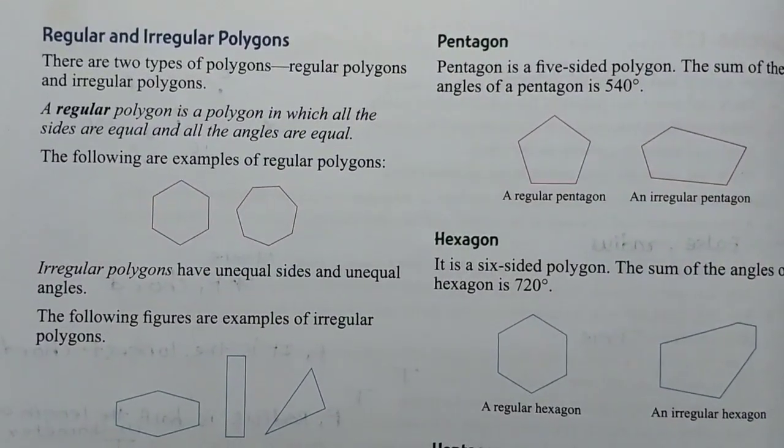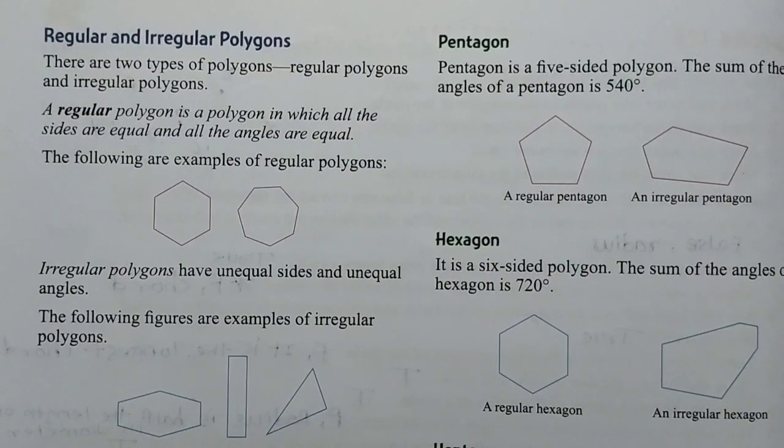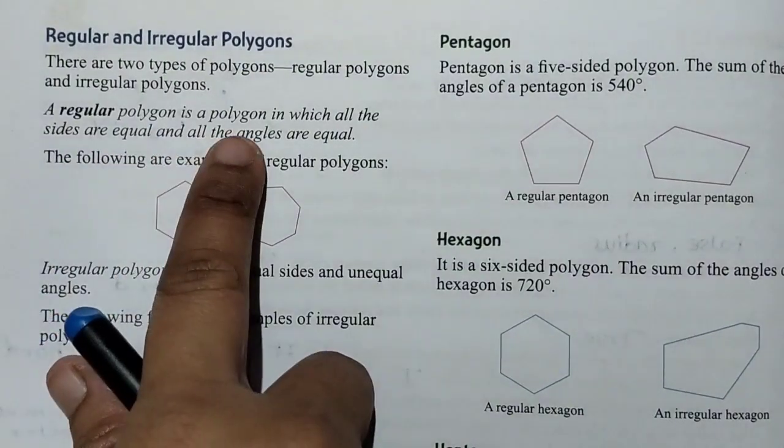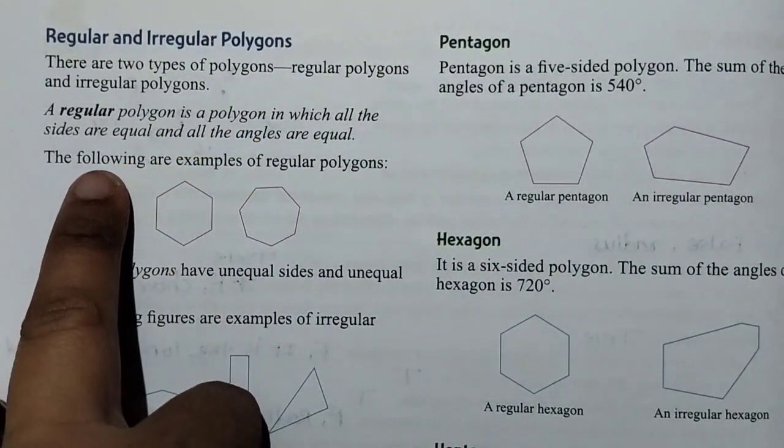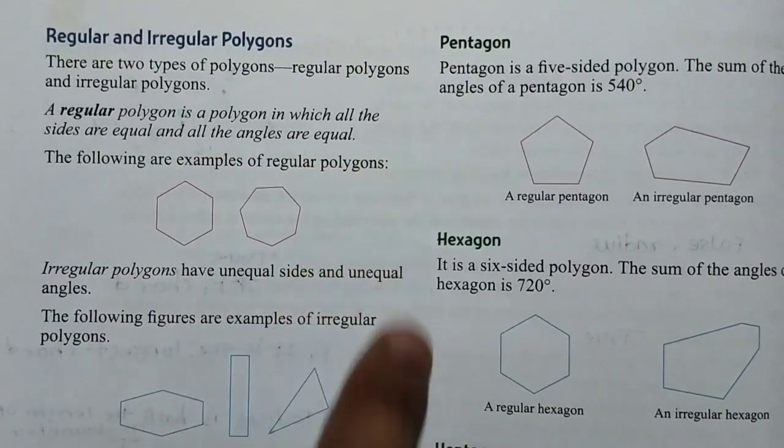So what are the regular and irregular polygons? A regular polygon is a polygon in which all the sides are equal and all the angles are equal.